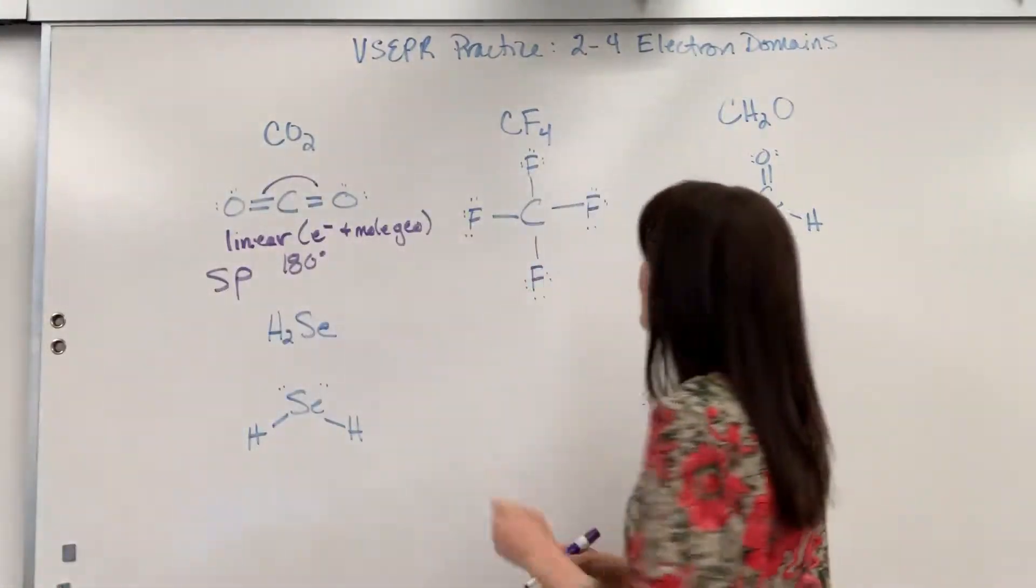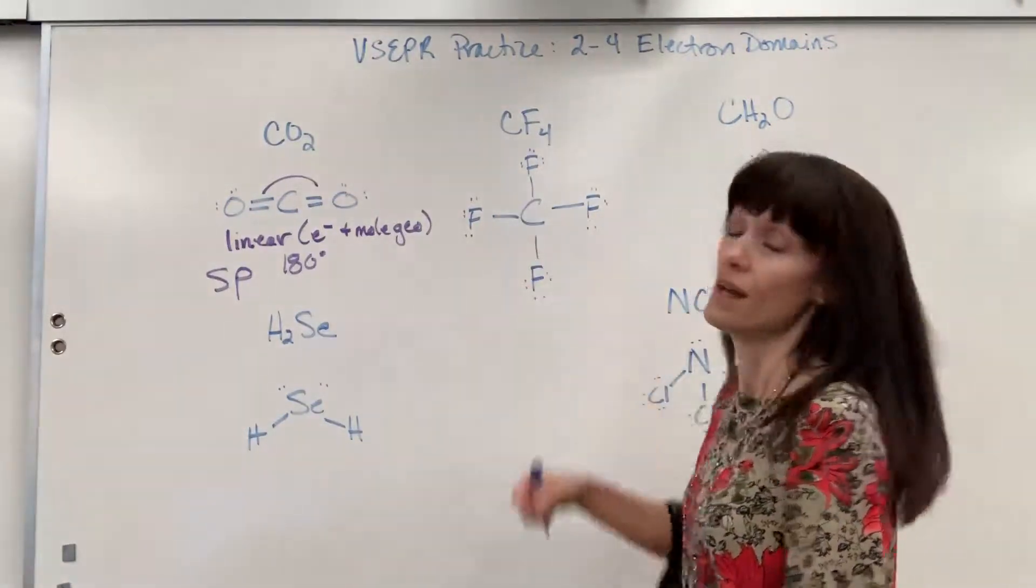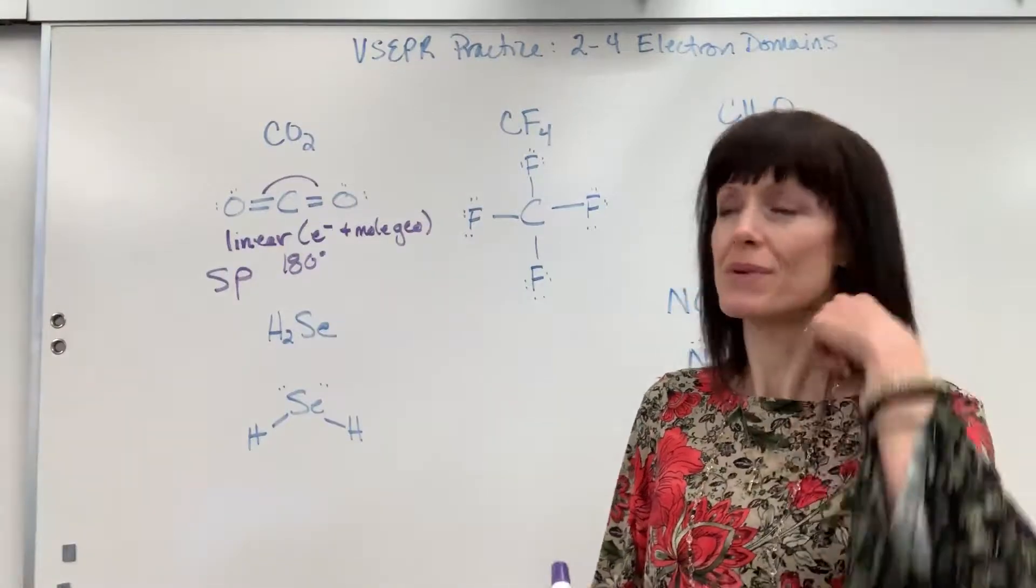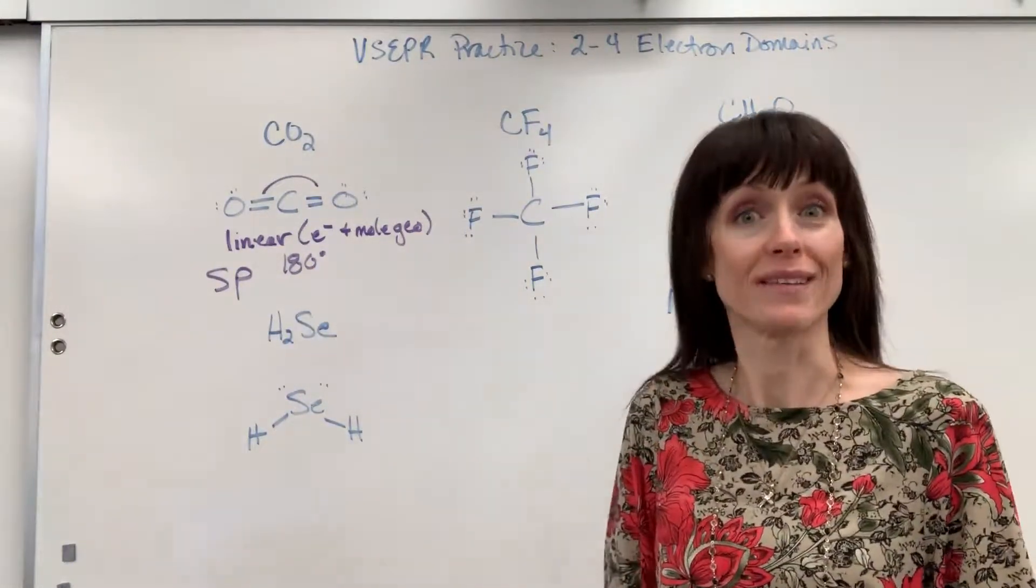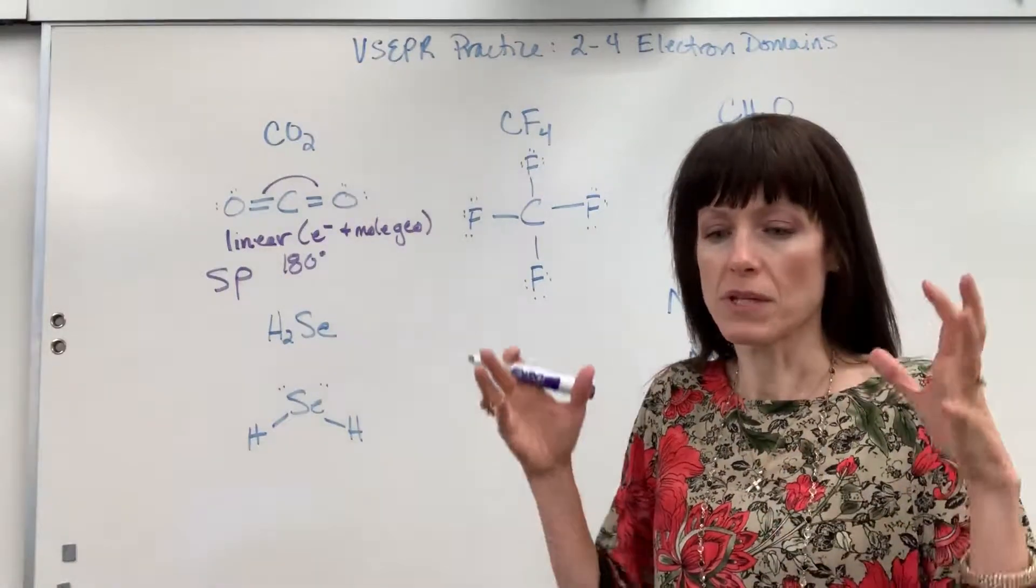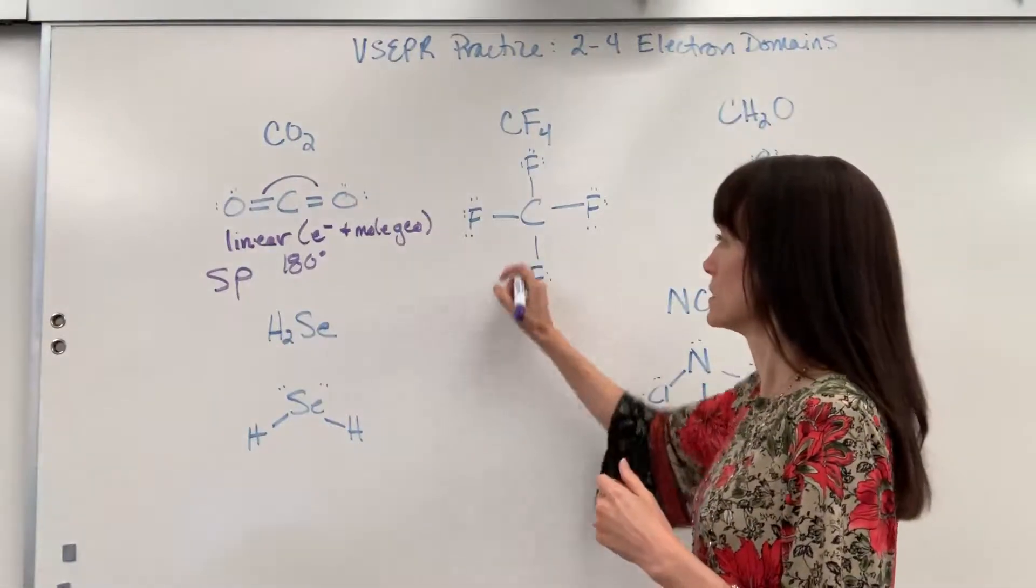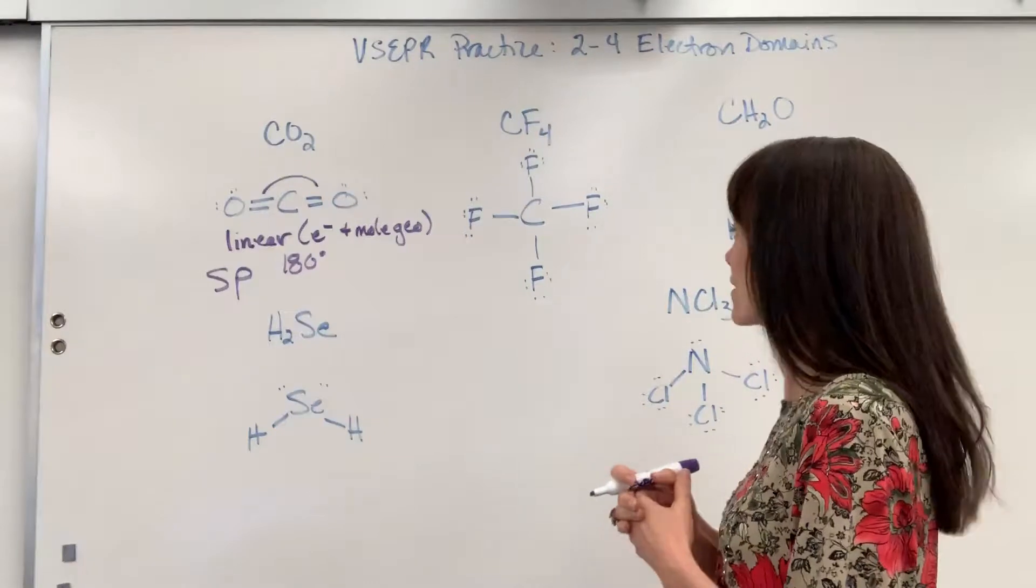Let's come to a carbon tetrafluoride. Again, count electron domains. One, two, three, four. Okay, all the electron domains are bonded. There are no lone pairs. Remember in that situation, that's when the electron geometry and molecular geometry are the same. The shape is defined by the electron geometry and molecular geometry is what we see.